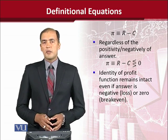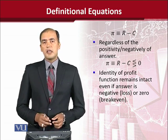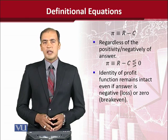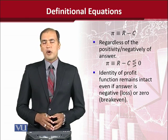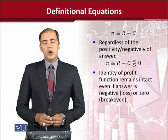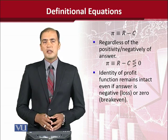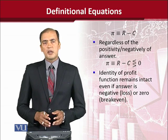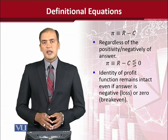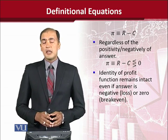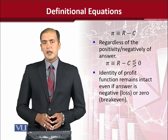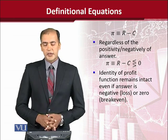That less-than-zero possibility shows loss instead of profit. The third possibility is the equality of revenues and cost, which is very well known as the break-even point, where revenues equal costs — that is, costs are recovered and we haven't earned anything or lost anything. No matter what the outcome is, it remains an identity, regardless of the numerical outcome.